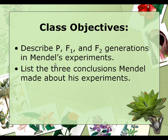After this slideshow, you should be able to describe the three different generations — P, F1, and F2 — from Mendel's experiments, and the three conclusions that he made about these experiments.